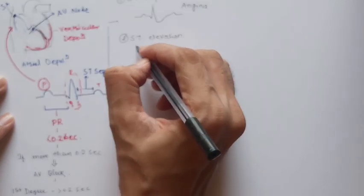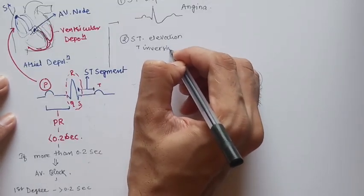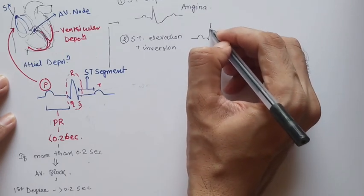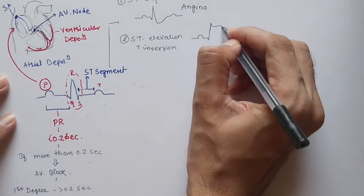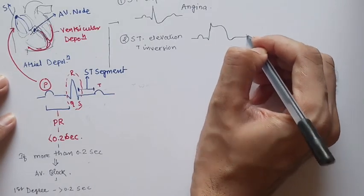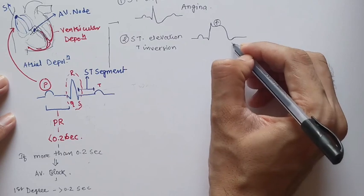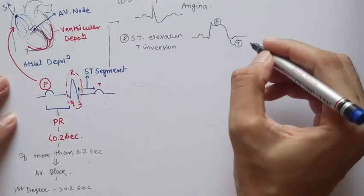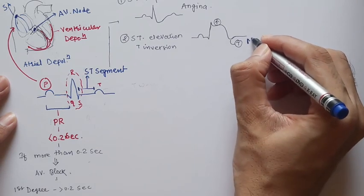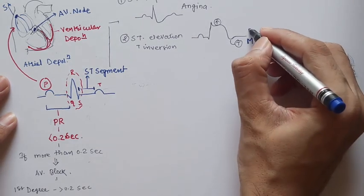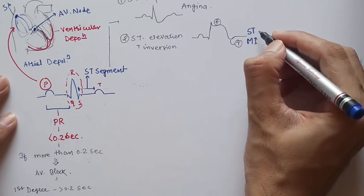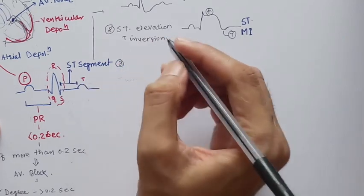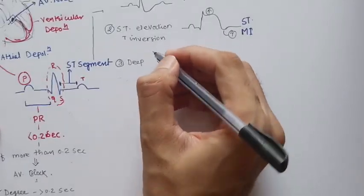ST elevation is one of the most important diagnostic features of myocardial infarction — acute myocardial infarction shows ST elevation. There is also T inversion: instead of a normal T wave, we have an inverted T wave, which is characteristic of acute or new myocardial infarction. This is called ST-elevated myocardial infarction (STEMI).